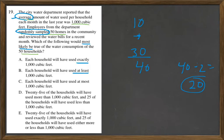C, each household will have used at most 1,000 cubic feet. That's saying it's 1,000 or less. No numbers would be higher. So that can't be it.